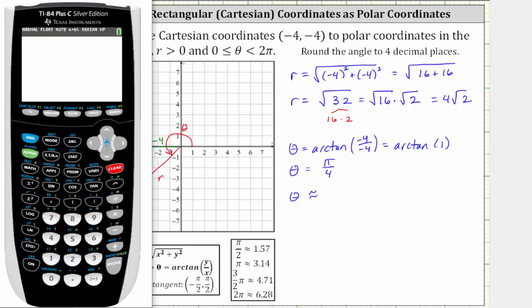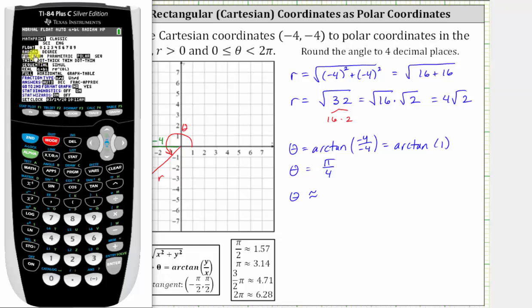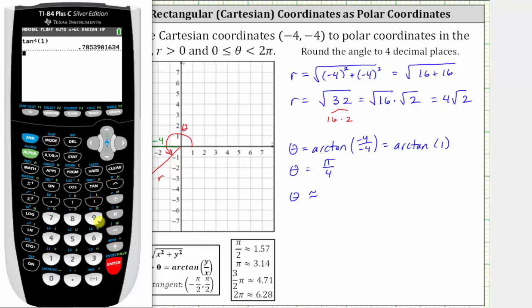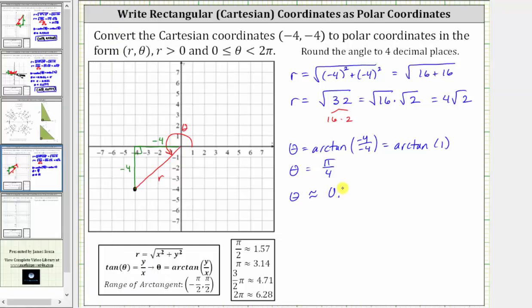We need to verify we are in radian mode. Press mode, radian is highlighted. Go back to the home screen, press second tangent one, close parenthesis, and enter. Because we have a nine in the fifth decimal place, we round up to 0.7854 radians.